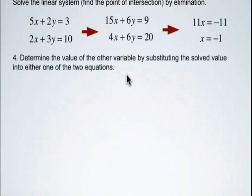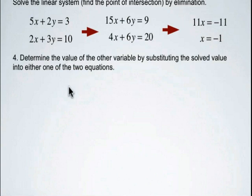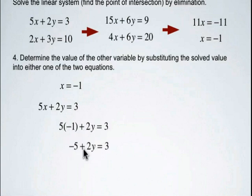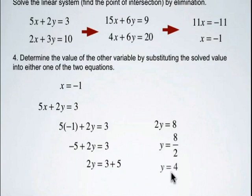Now that we've found x equals negative 1, we substitute back into one of our original equations. Using the first equation, 5x plus 2y equals 3, we sub in x equals negative 1: 5 times negative 1 plus 2y equals 3. That gives negative 5 plus 2y equals 3, so we add 5 to both sides to get 2y equals 8, and dividing by 2 gives y equals 4.